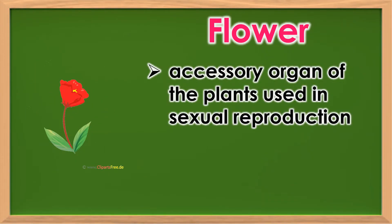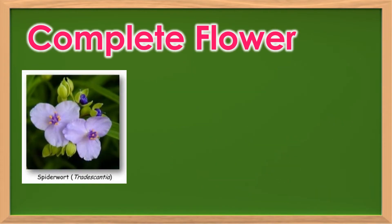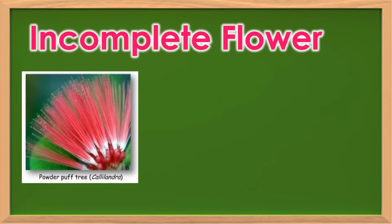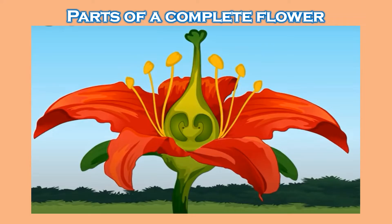Flower is an accessory organ of the plants, used in sexual reproduction. It can be classified as complete and incomplete. A flower is said to be complete when it has both male and female reproductive parts. On the other hand, it is incomplete when it has only one reproductive part, either male or female. Let us now study the different parts of a complete flower.